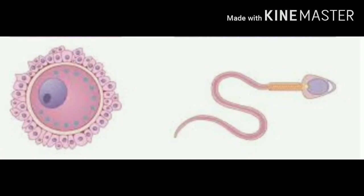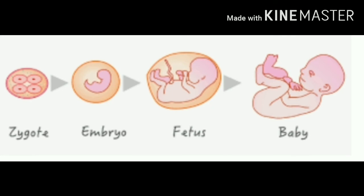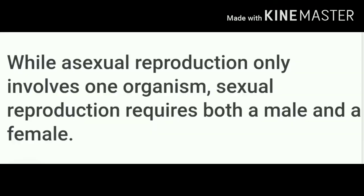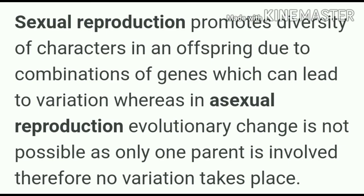The male gamete is smaller and more active than the female gamete. The female gamete is larger, filled with reserved food, and remains passive. The cell formed after the fusion of male and female gametes is called a zygote. The zygote divides repeatedly to form new individuals. Sexual reproduction is most common in multicellular organisms.